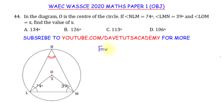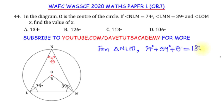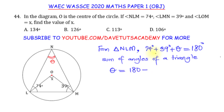We look at triangle NLM. The sum of 74 degrees, 39 degrees, and this angle theta is equal to 180 degrees, because they constitute the sum of angles of a triangle, which is always 180 degrees. Therefore theta equals 180 minus the sum of 74 and 39. 74 plus 39 equals 113, so theta equals 180 minus 113, which is 67 degrees.